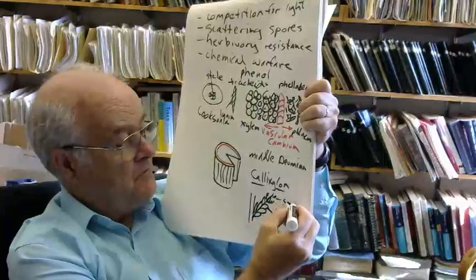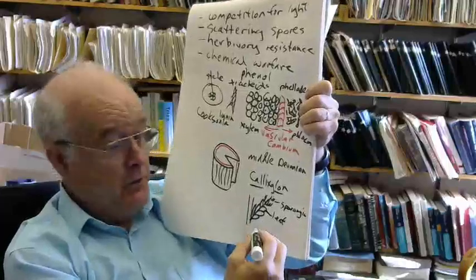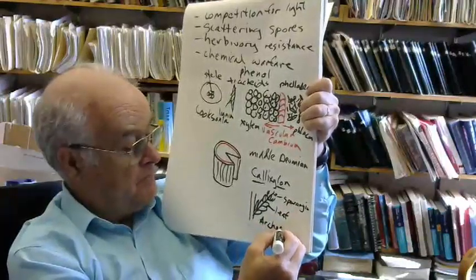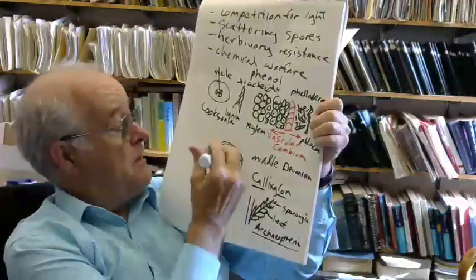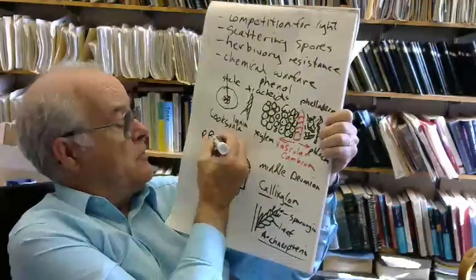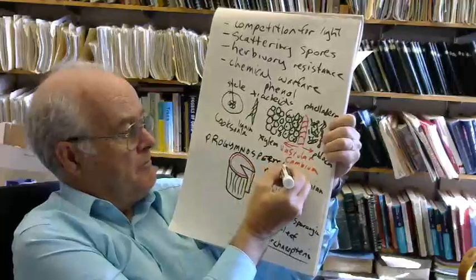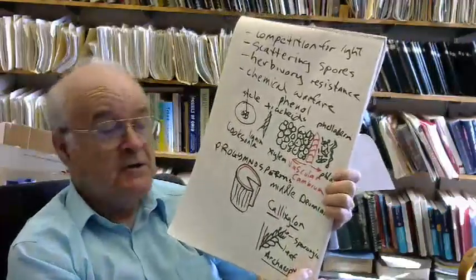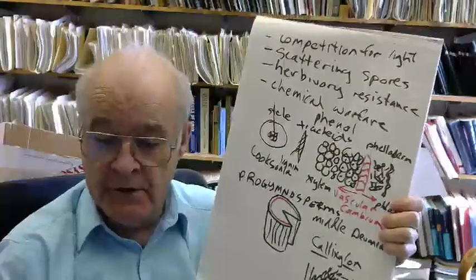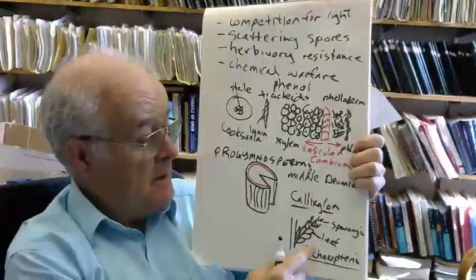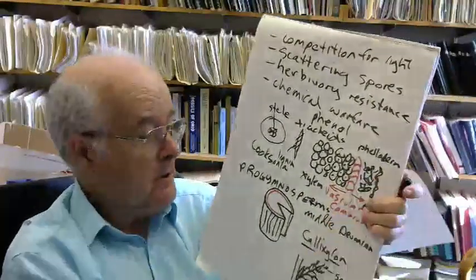And these are sporangia. This was originally thought to be a fern and it was actually given the name Archaeopteris. Not to be confused with Archaeopteryx, the first bird. These are examples of progymnosperms. In the middle Devonian, Calixylon. Large trees which had a very typical method of forming secondary wood, pretty similar to that of conifers today. And yet they were spore plants which had a spore kind of a reproductive system.